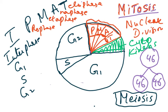Cytokinesis is not part of nuclear division — it is when the cytoplasm divides, and by this time the two cells will have formed. The process of cell division starts here.